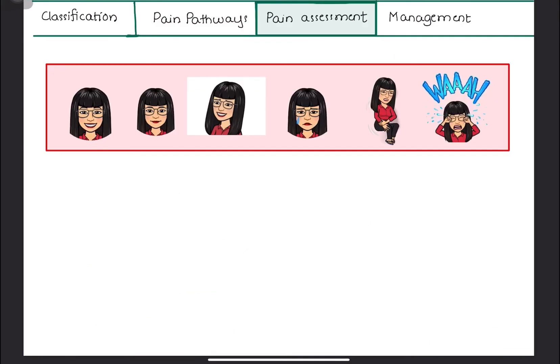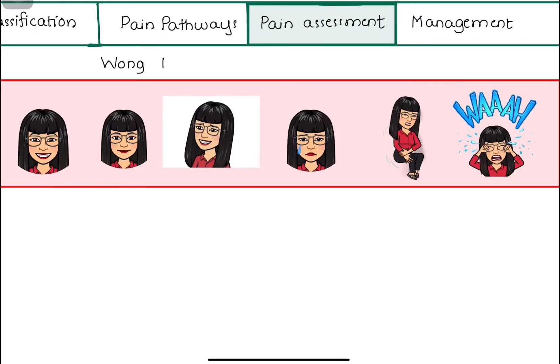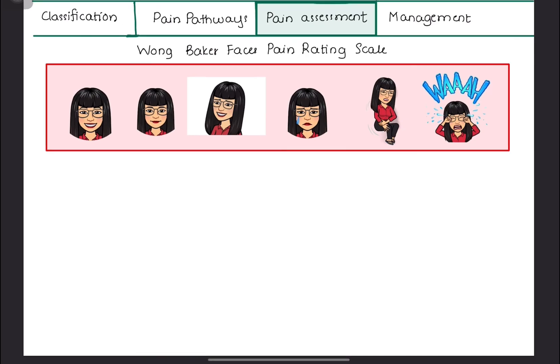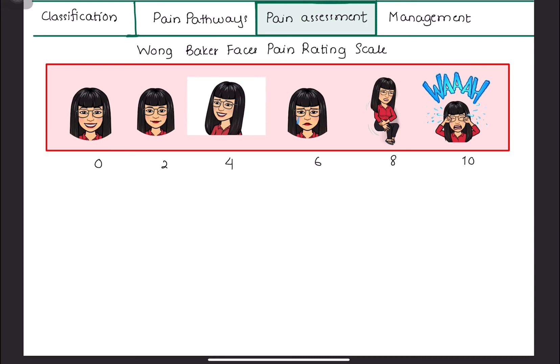Several assessment methods are used in order to measure the intensity of pain, and one of them is Wong-Baker Faces pain rating scale. It illustrates six faces with different expressions, ranging from happy to extremely sad face. Each is assigned with a number, rating between 0 and 10. You can ask the patient to point to the picture that best represents the intensity of his pain.